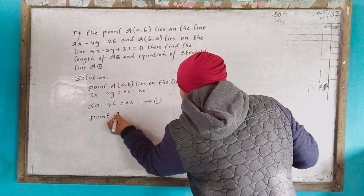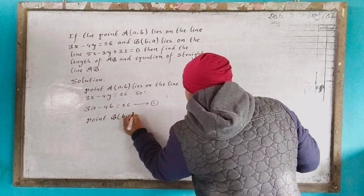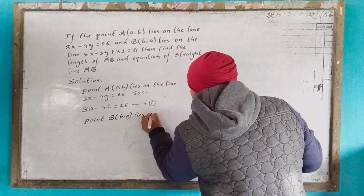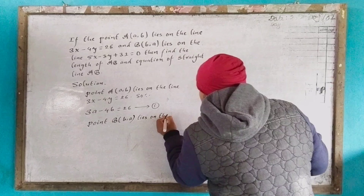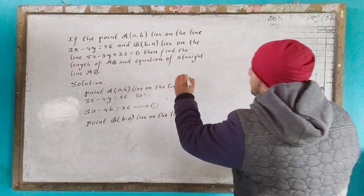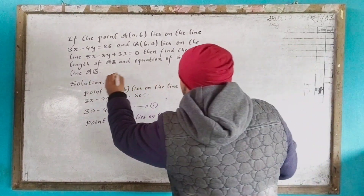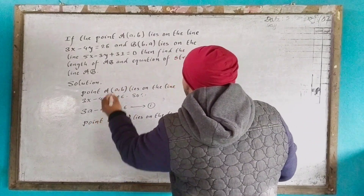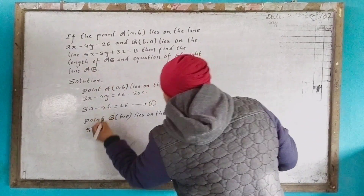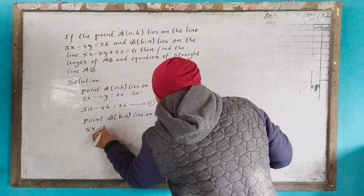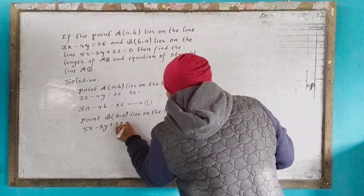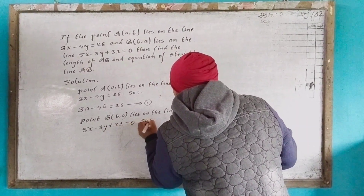B and A lie on the lines. A lies on the line. For this, understand: 5x minus 3y plus 31 equal to 0.